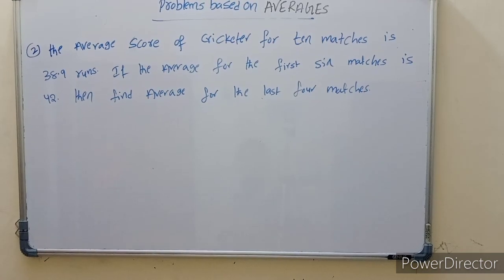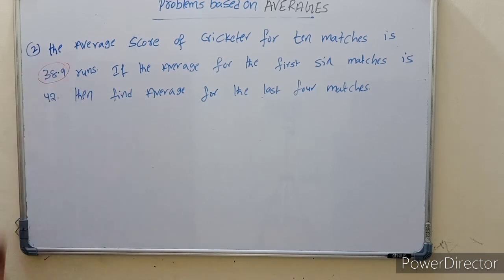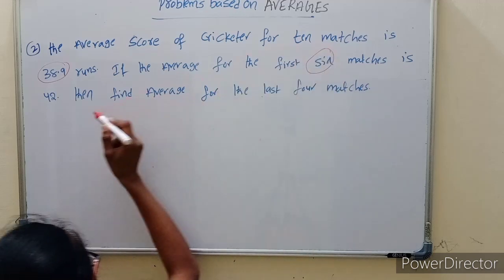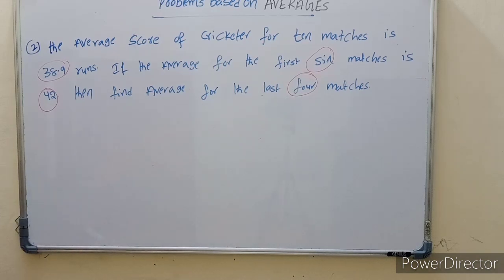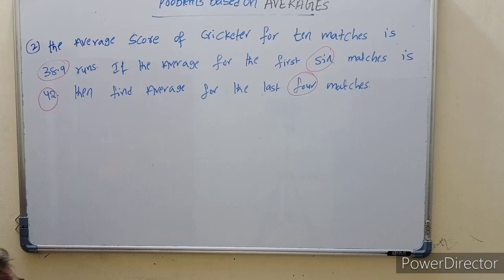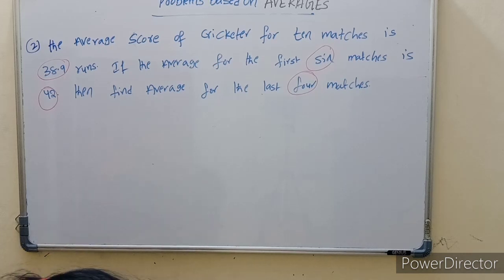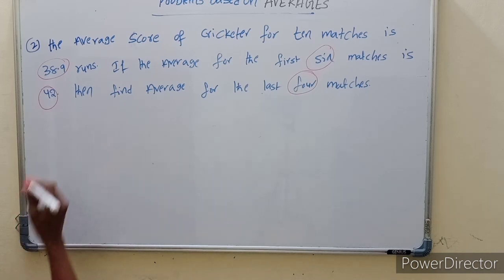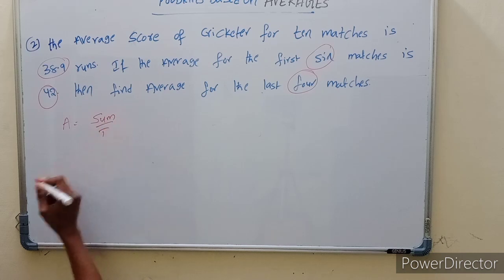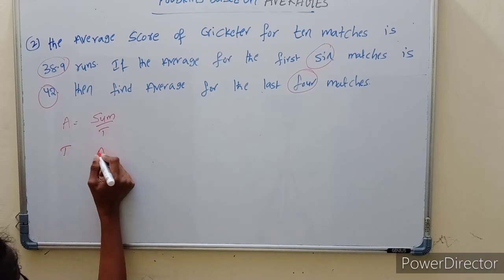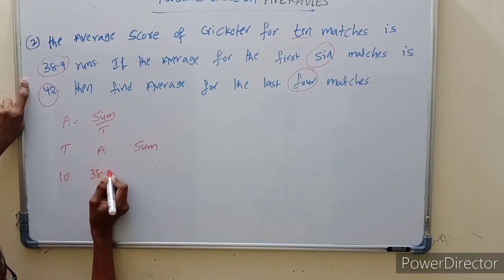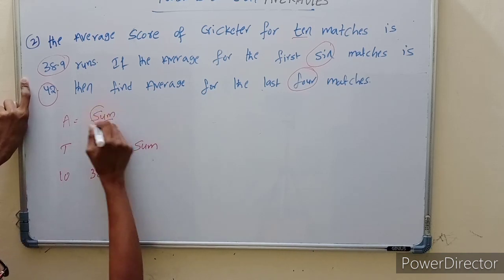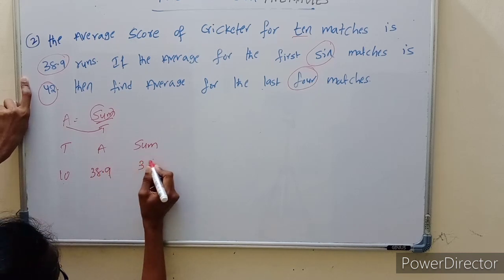Next problem: the average score of a cricketer for 10 matches is 38.9. If the average for the first 6 matches is 42, find the average of the last 4 matches. Total sum for 10 matches equals average into total: 38.9 into 10 equals 389.